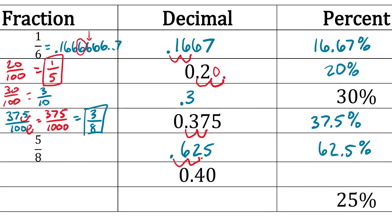Next row: 0.40. To get to a percent, move the decimal two places to the right — we get 40%. To get the fraction, write 40 over 100. Both are divisible by 20, so we end up with two-fifths.